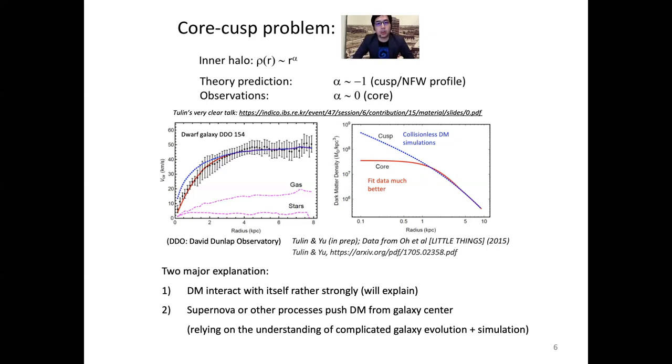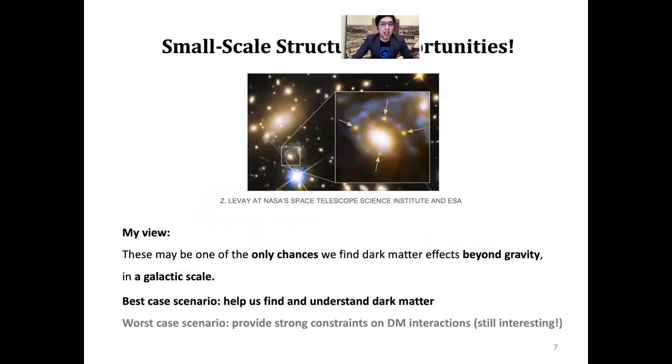There are two major solutions. One is saying that dark matter might have some interesting special property to cause that. The other is that there's something called baryonic feedback, that supernovae blow away things inside the center of the galaxy to cause the coring. My view is this is not necessarily a problem because supernova baryonic feedback could potentially solve a lot of this issue already. But still, this is a great opportunity for us to understand the dark matter property and to constrain the interaction.